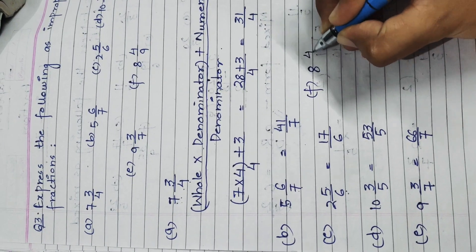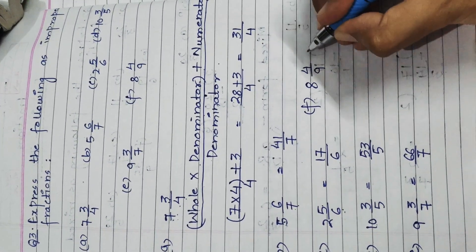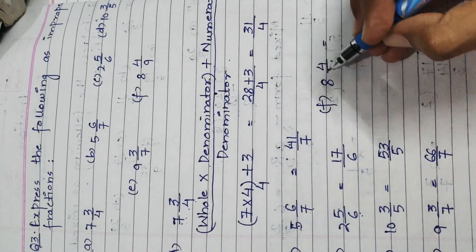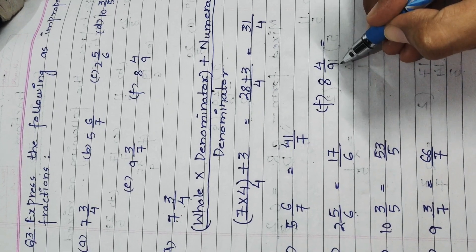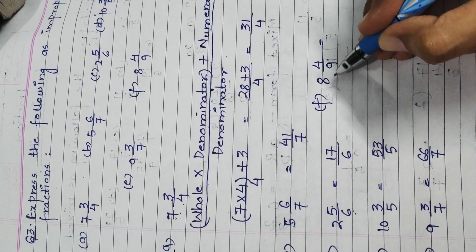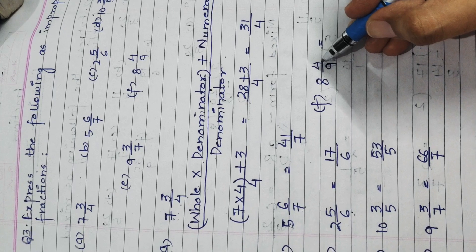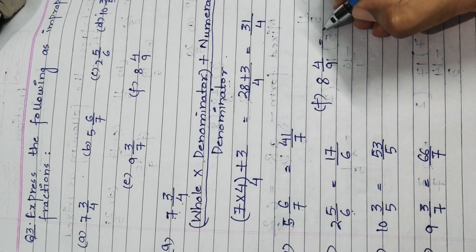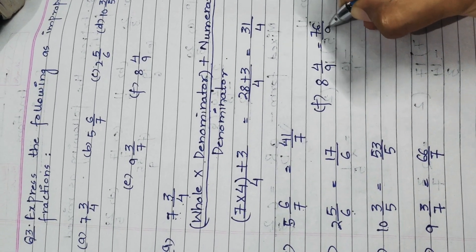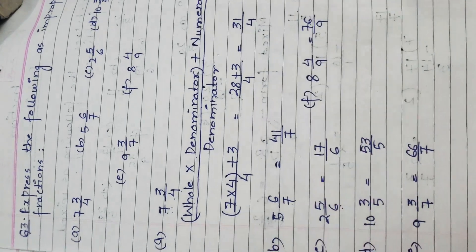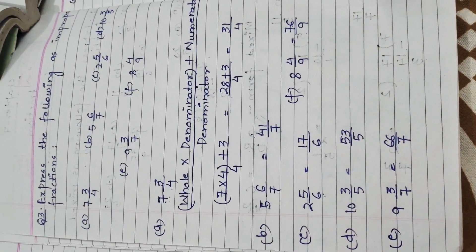Part F is 8 whole 4 upon 9. We multiply the whole by the denominator: 8 × 9 = 72, and 72 + 4 = 76. The answer is 76 upon 9. Hence we have the answers for all the given parts.